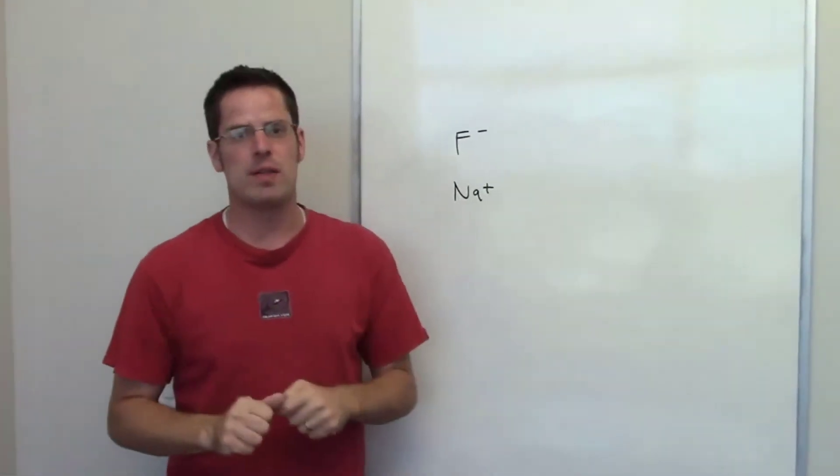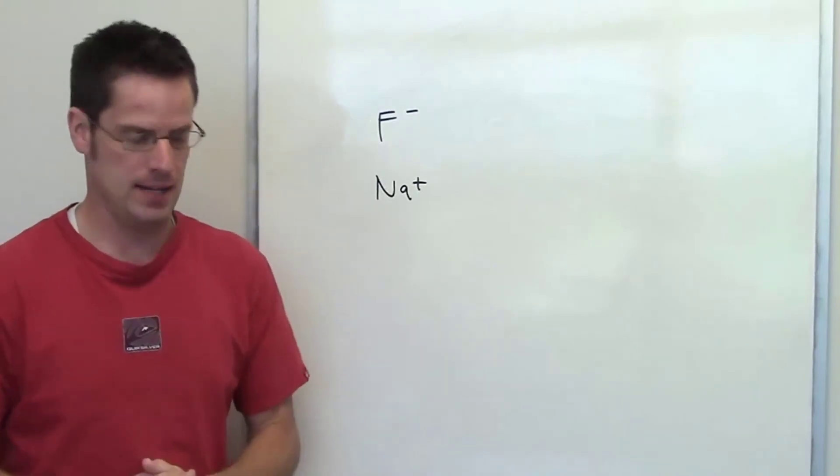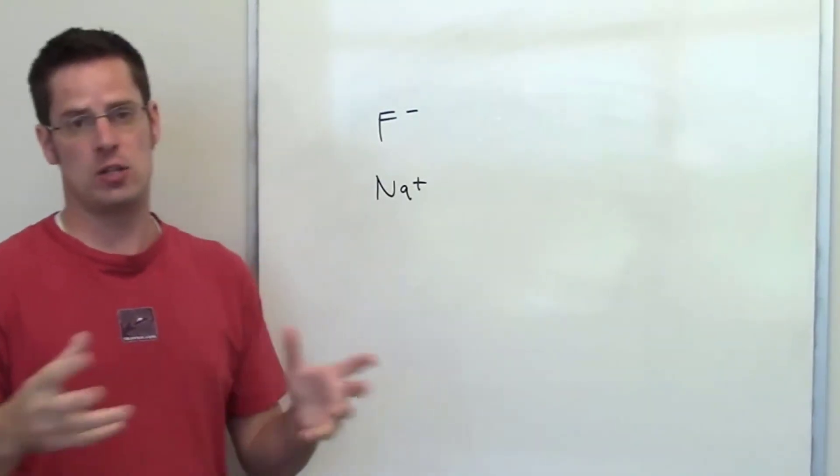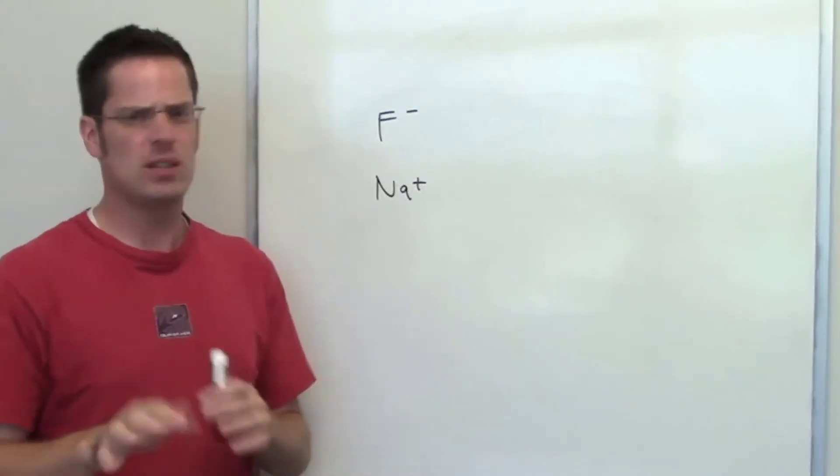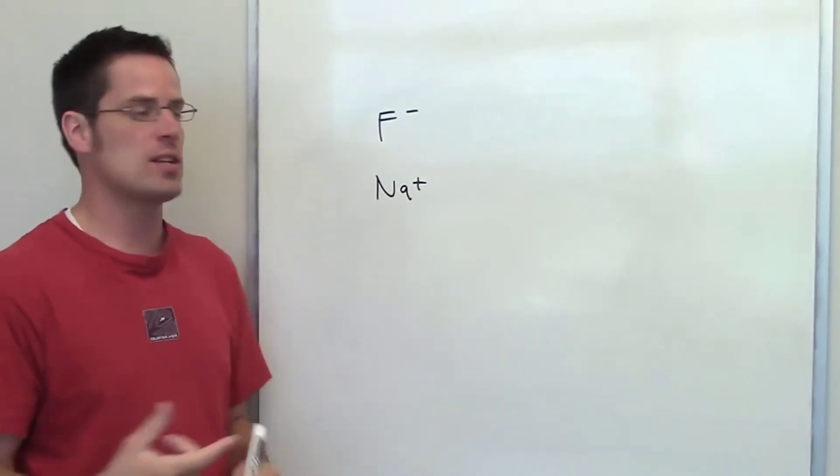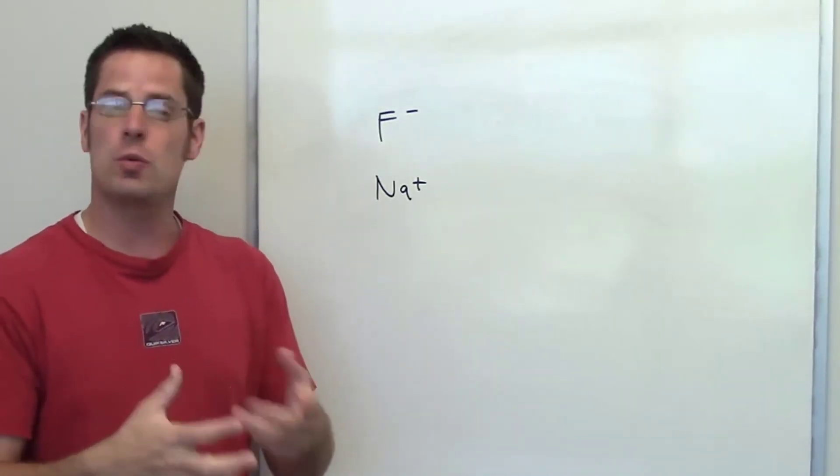In this question, we're asked to compare the ions fluoride, F minus, and sodium cation, Na+. Both of those elements are isoelectronic. They have the same number of electrons as neutral neon. But the question doesn't ask that. The question asks us to compare size. How in the world do I determine which one is larger and which one is smaller?